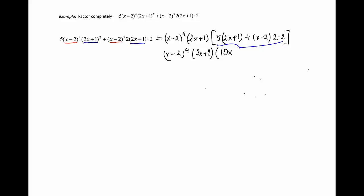So we'll have 10x plus 5 plus 4x minus 8, and combining the like terms will give us 14x minus 3. The final answer is x minus 2 to the fourth power times 2x plus 1, and in the last parentheses we'll have 14x minus 3. This is the complete factorization of that expression.